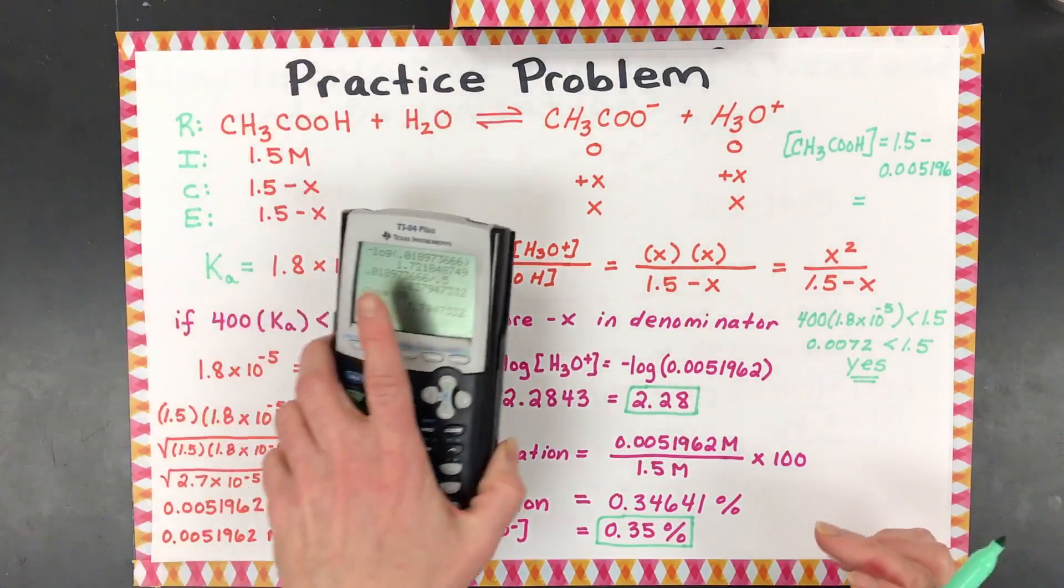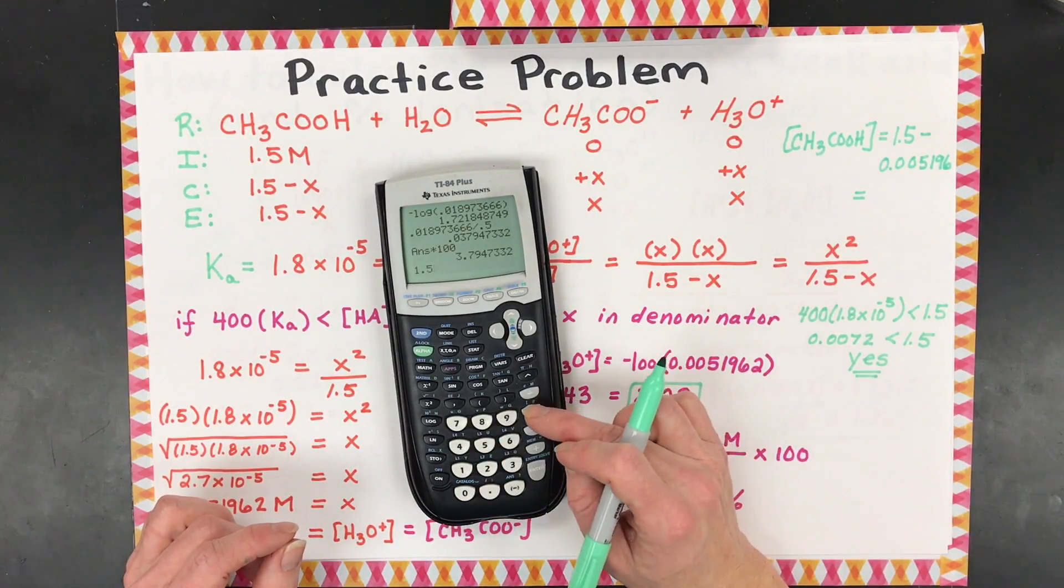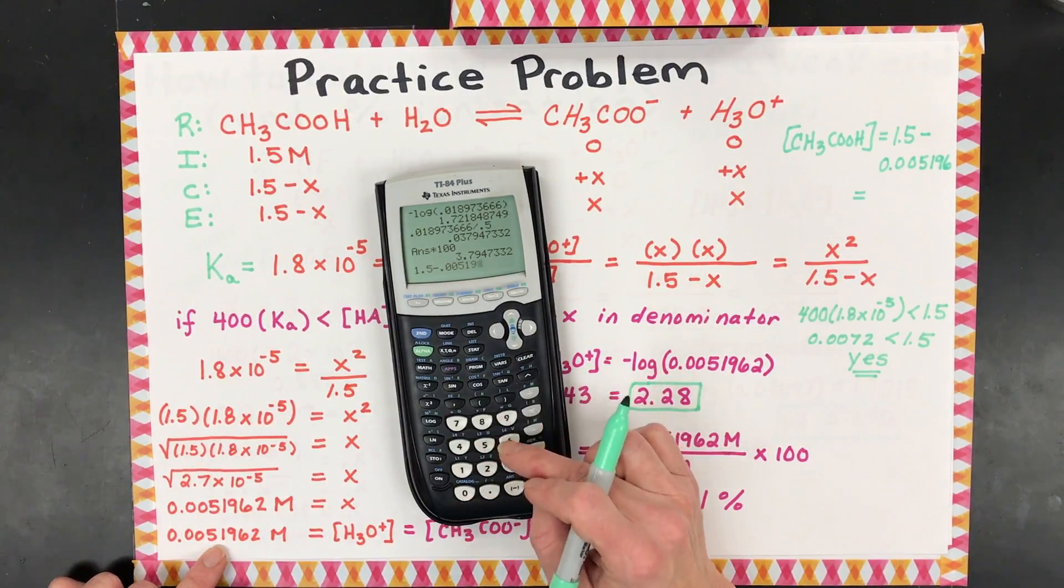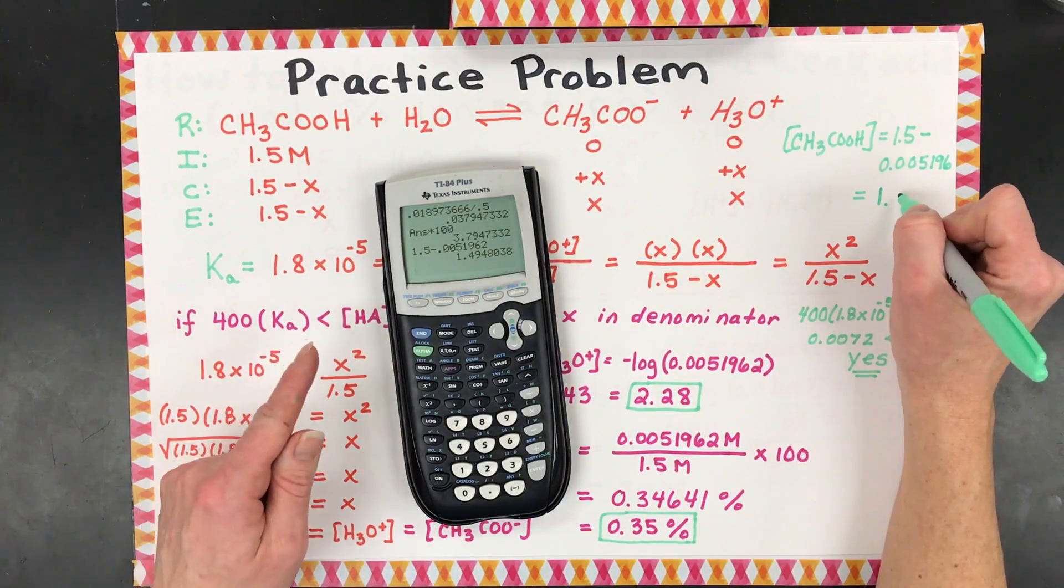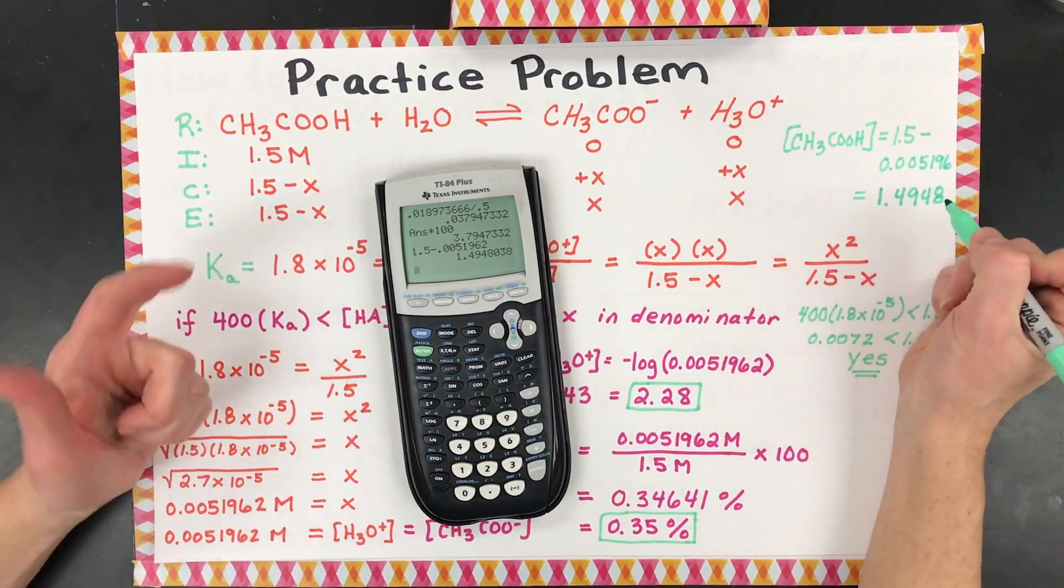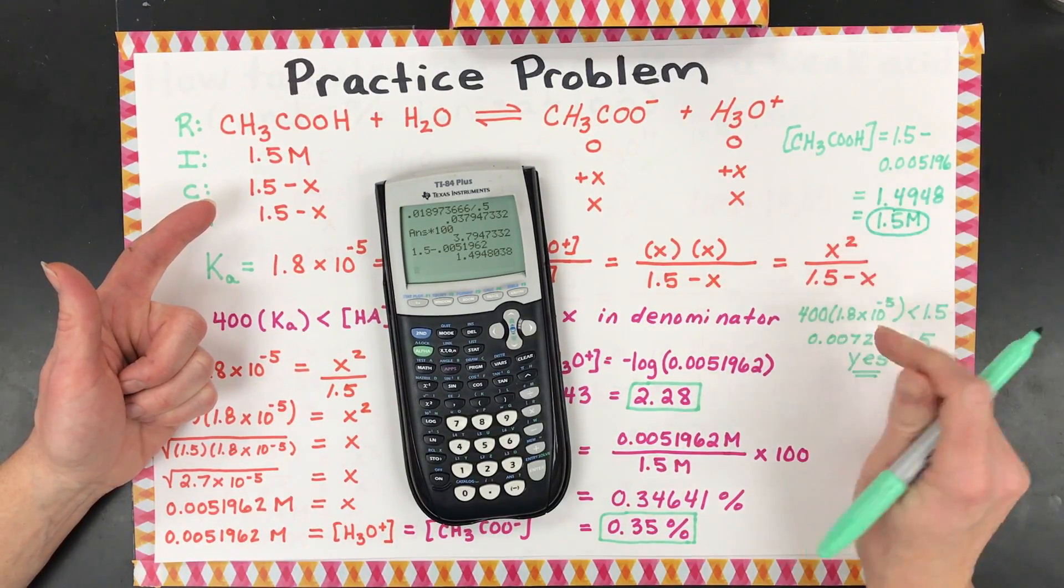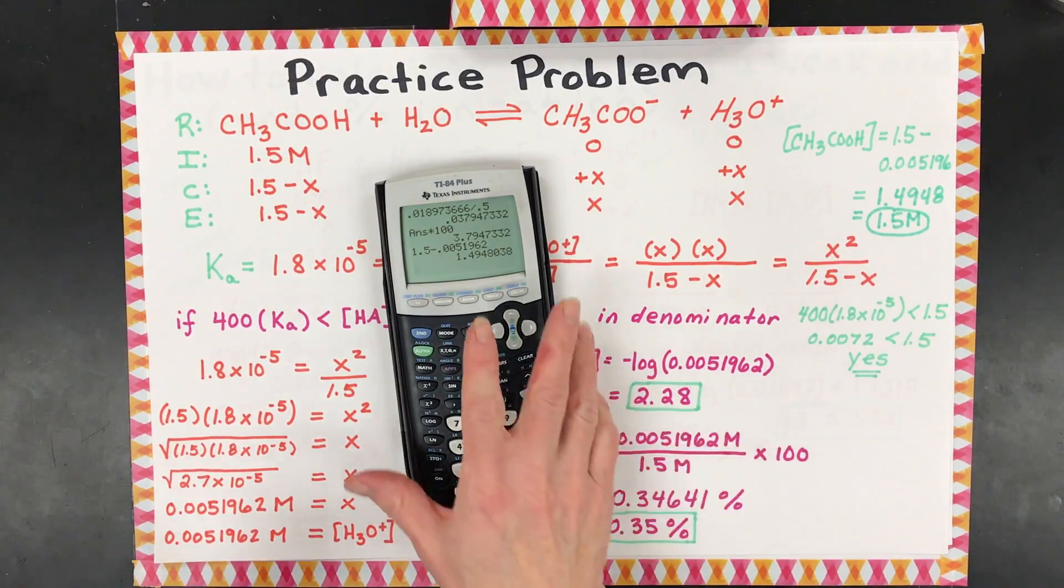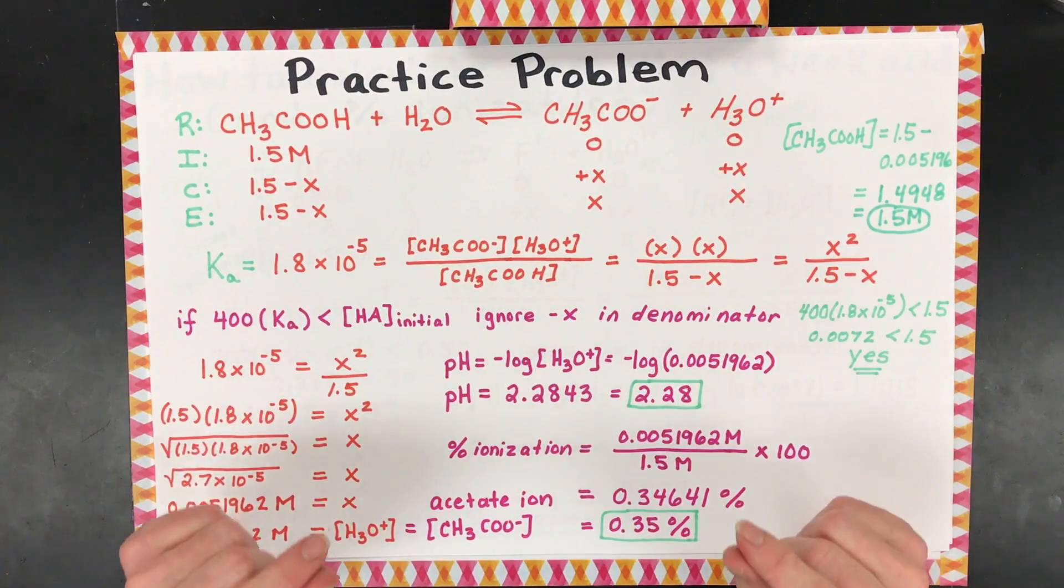Look what happens with sig figs. What does it go back to? 1.5. Look at that. Might make you go, wait a minute. Now I think I understand why we can get rid of that X in the bottom. Great. Go forth, calculate your own weak acids and enjoy. Best wishes chemists. See you again in the next video.